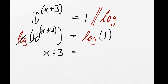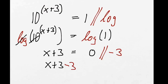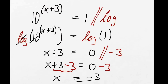Log and '10 to the power of' cancel out, so what we have left on the left-hand side is x plus 3 equals log(1), which gives us 0. So we've reduced this to x plus 3 equals 0. We take both sides minus 3: x plus 3 minus 3, the plus 3 and minus 3 eliminate each other, and all we have left is x equals minus 3.